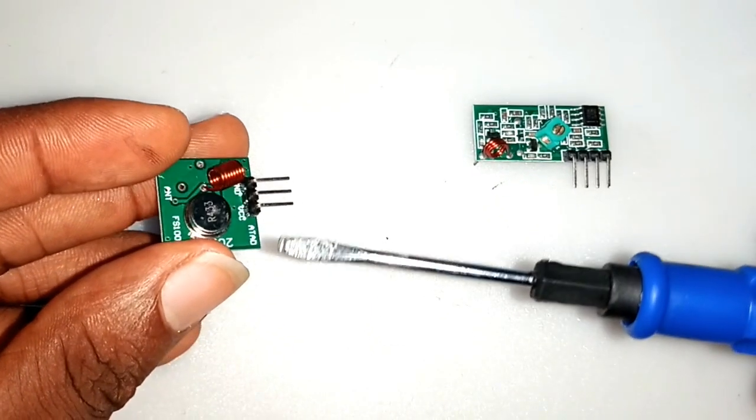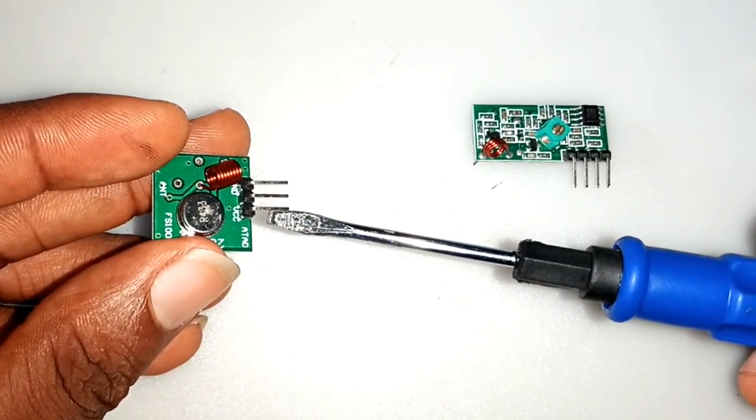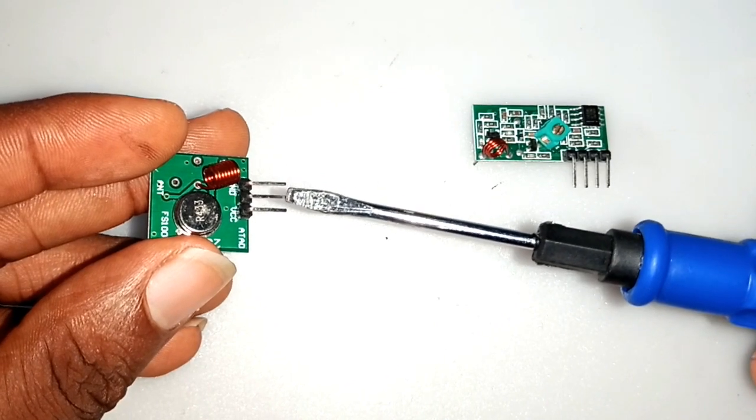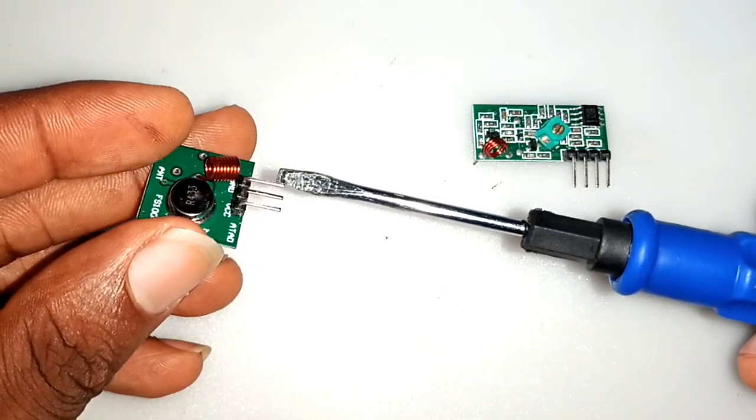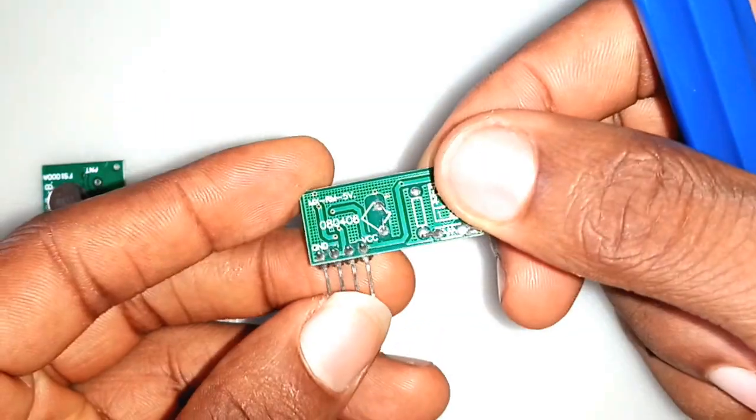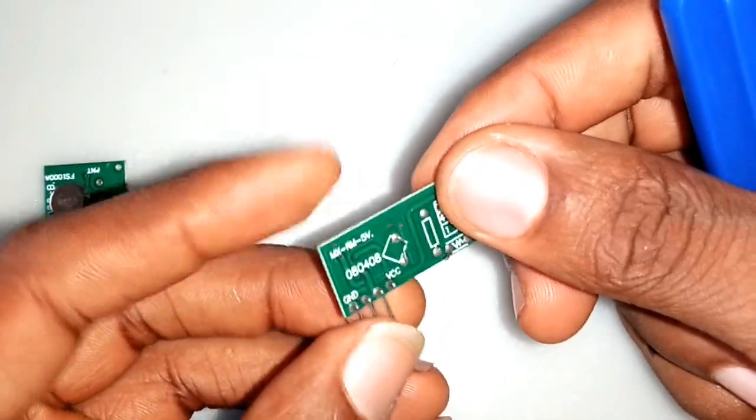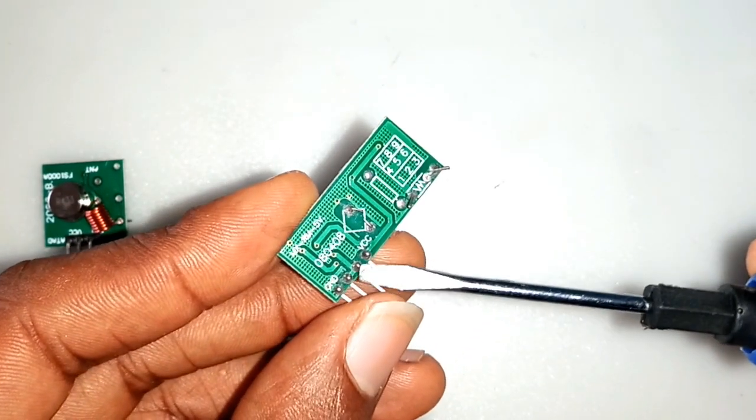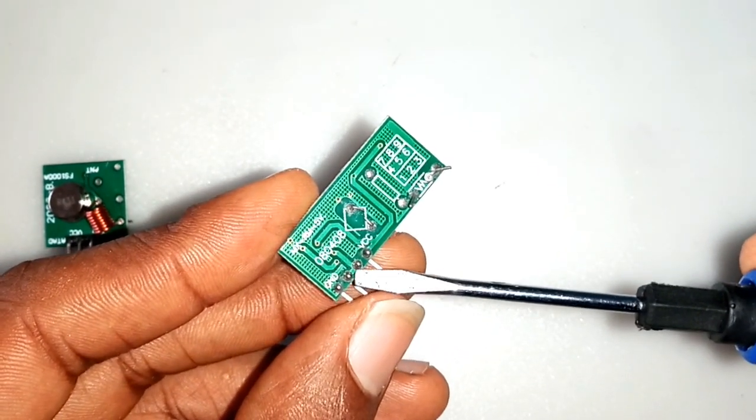The RF module has 3 main terminals which include the data pin, VCC and GND as it is shown clearly. The receiver module also has the same terminal number, just that the data pin is 2 in number, so feel free to use any one of them.